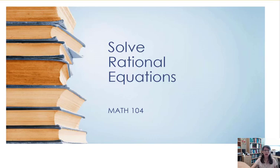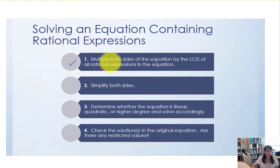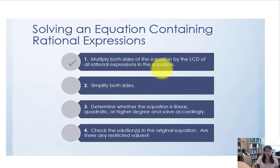In this video we're going to talk about how to solve rational equations. To solve rational equations containing rational expressions we're going to follow four steps. The first step is to multiply both sides of the equation by the lowest common denominator of all rational expressions in the equation. We'll need to check every denominator, make sure it's completely factored, and then build our LCD upon those unique factors.